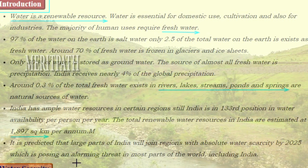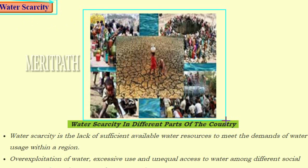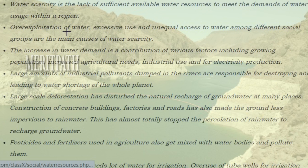Water scarcity is a problem visible in different parts of the country, with people in dry regions standing in queues for water. Water scarcity is defined as the lack of sufficient available water resources to meet the demands of water usage within a region. Over-exploitation of water, excessive use, and unequal access to water among different social groups are the main causes of water scarcity.